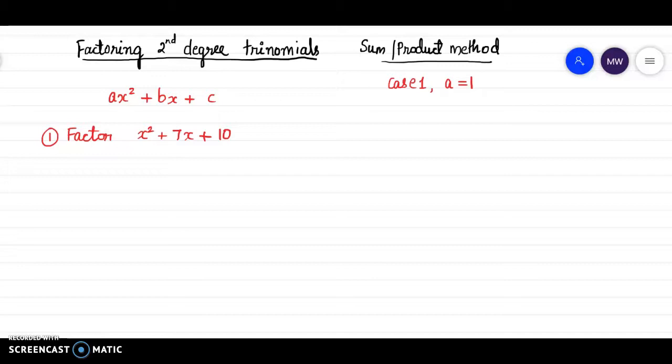We are factoring second degree trinomials using the sum product method. Now there are two cases in these type of problems. The first case is when the leading coefficient is 1 or a is equal to 1.